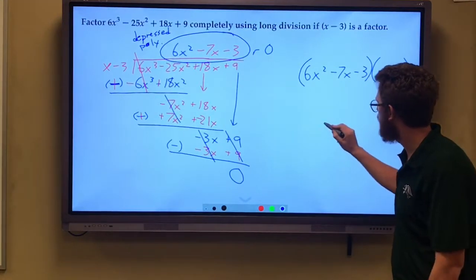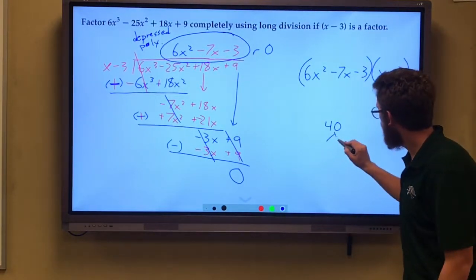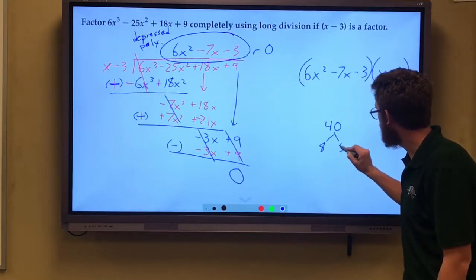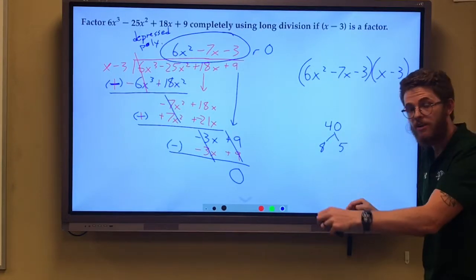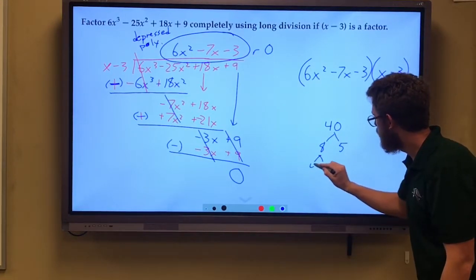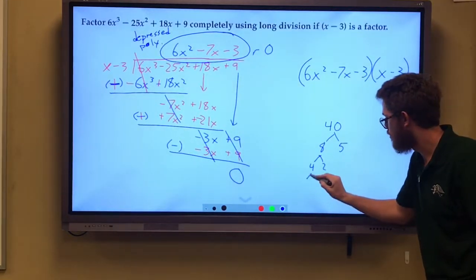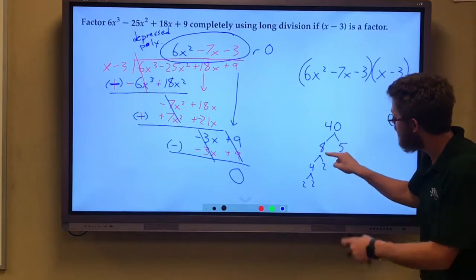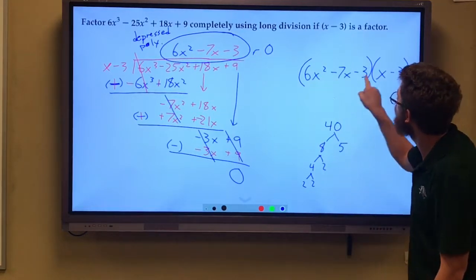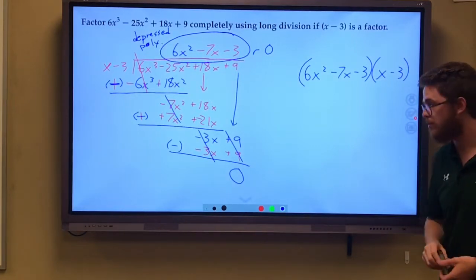It's just like saying, okay, I want to factor 40. I know it's 8 times 5. There's our 5. There's our 8. I can still factor that 8 to a 4 times 2 and maybe further. Of course, further in this case, it's 2 times 2. But we want to factor just like this 8. We can factor it further. We want to do that right here and factor this 6x squared minus 7x minus 3.